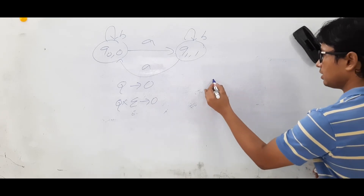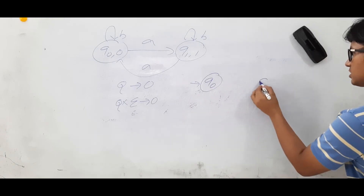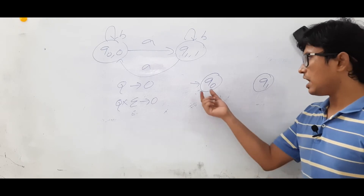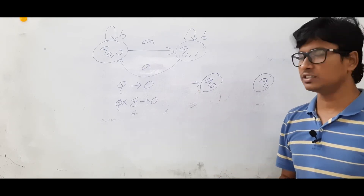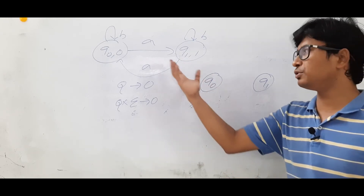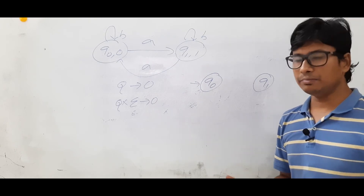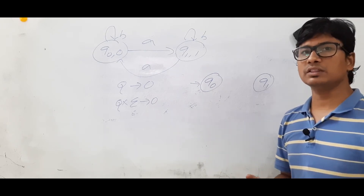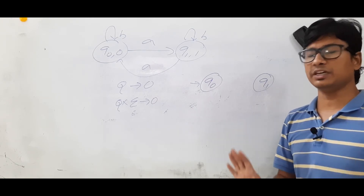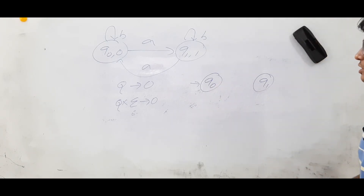How will I do it? The number of states will not change in this conversion — the number of states after converting a Moore machine to a Mealy machine will not change. The initial state also will not change. You can ask whether the final state will change — no, because there is no final state in the Moore machine, so how will you get a final state in the Mealy machine? There is no final state in the Mealy machine either. Remember, Moore machines and Mealy machines generate output — they do not accept any language.